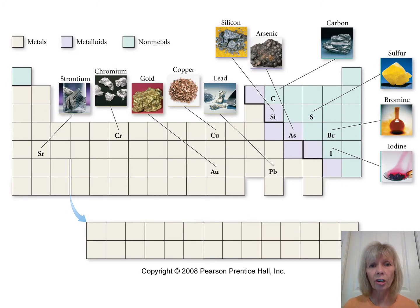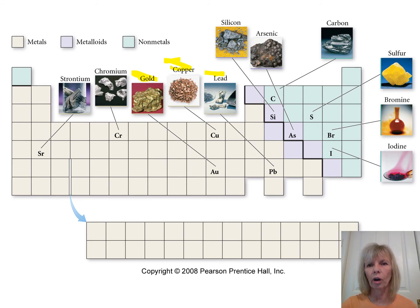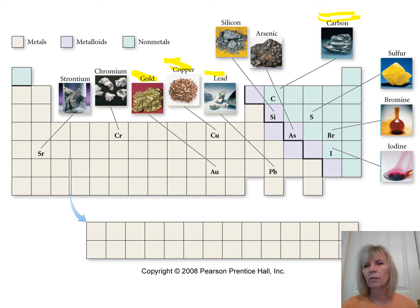A visual periodic table shows what some elements look like. Metals like gold, copper, and lead are familiar. Metals are always to the left of the metalloids along that bold diagonal. Non-metals are on the far right — carbon looks like charcoal briquette, and iodine, a purple solid, is used as a disinfectant.